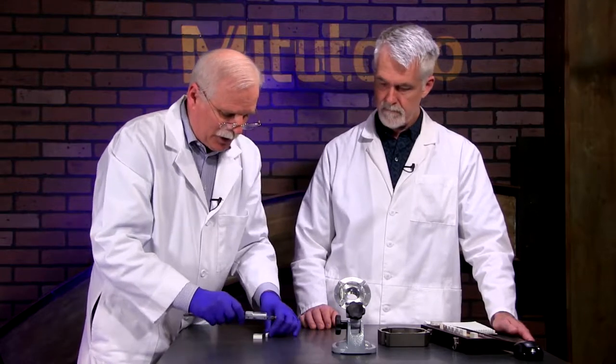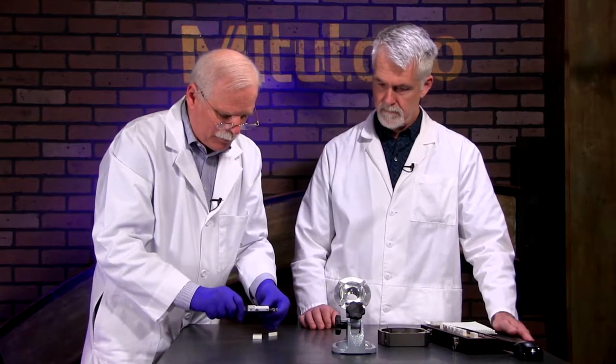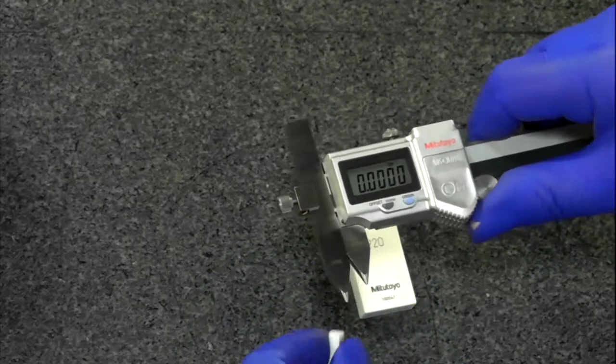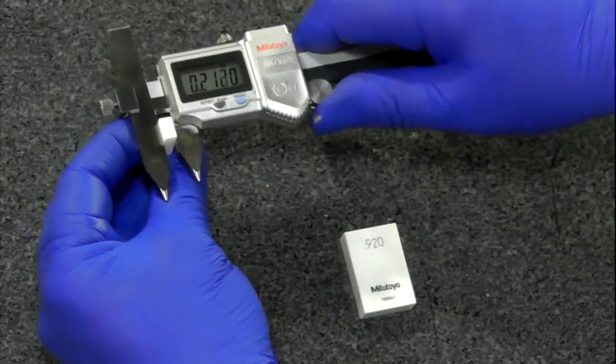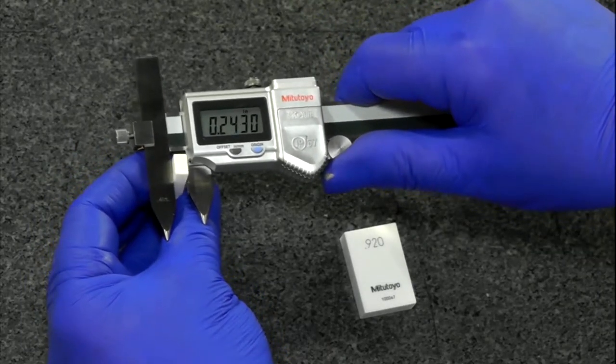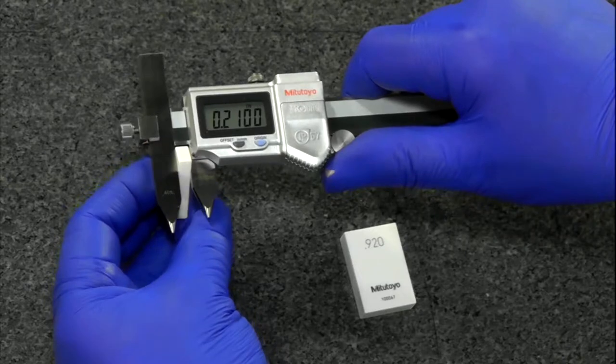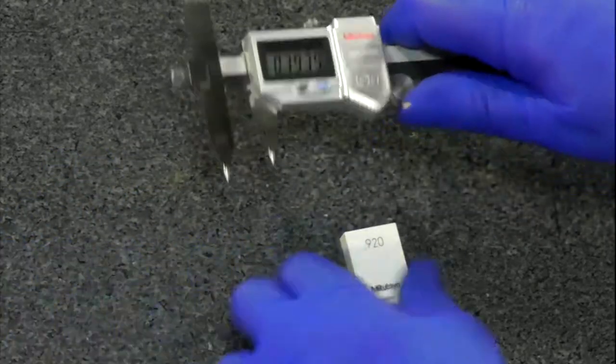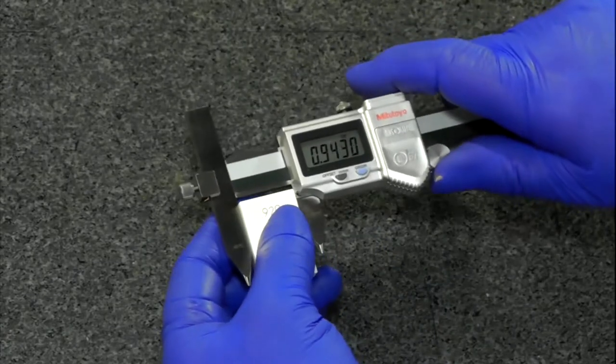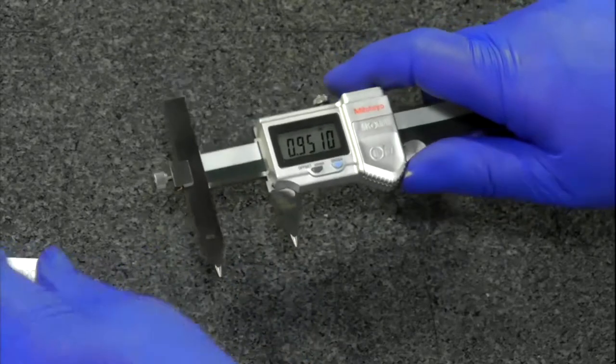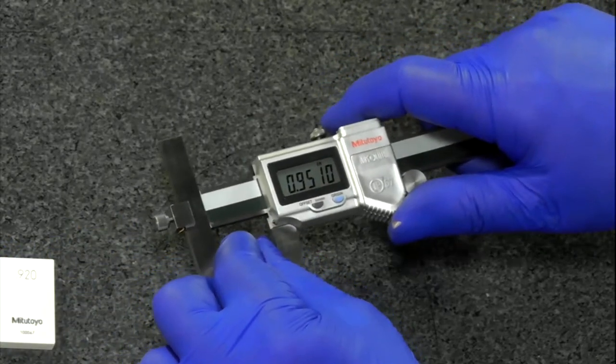You can use this as a normal caliper as we said. Removing the offset, we're zeroed. I'm using a 210 block under these lights. There's no telling how it's going to respond. Well, it looks like a 210. There's the 210. Here's a 920 block. We've got 920. So you can use it as a normal caliper for OD measurement.